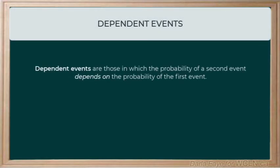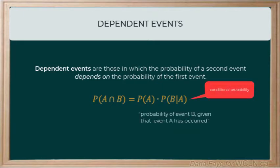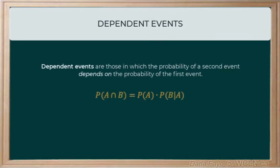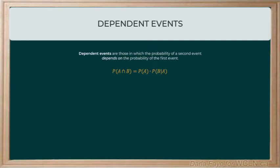If the probability of one event depends on the probability of another event, these events are called dependent events. Now, if event B depends on event A occurring, then the probability that both events occur will be shown using the following equation. This reads as the probability of A and B is equal to the probability of A multiplied by the conditional probability of event B, given that event A has occurred.